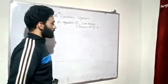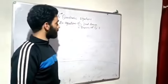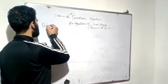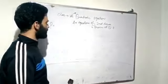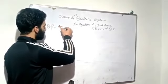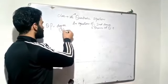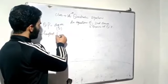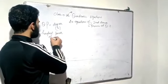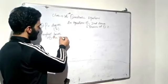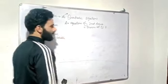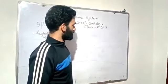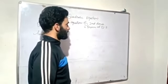An equation of second degree is called a quadratic equation — this is a quadratic polynomial. A quadratic polynomial has degree 2. The degree is the highest power of the variable. So the highest power of the variable defines the degree, and a quadratic equation is an equation of second degree.